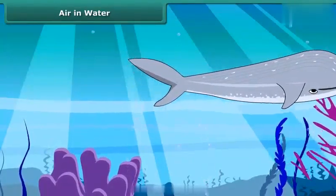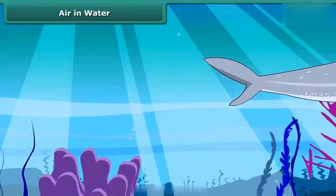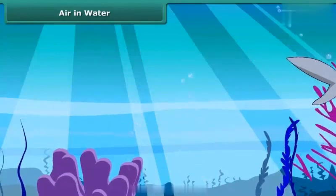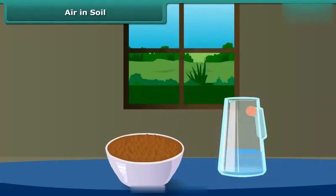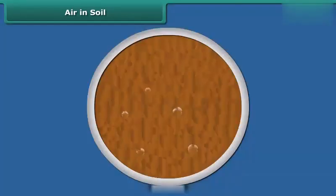The animals and plants in water use the dissolved oxygen for respiration. How do organisms living in soil get oxygen? To know this, take some soil in a bowl and pour some water on it. What do you see? You can see that air bubbles are coming out of the soil.